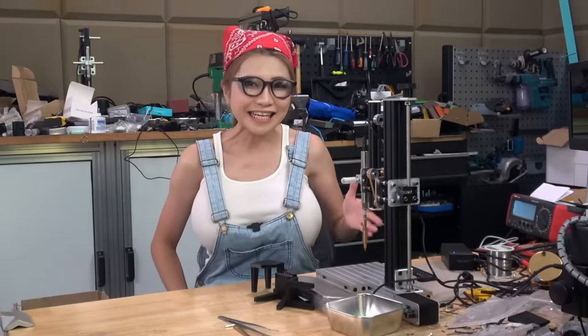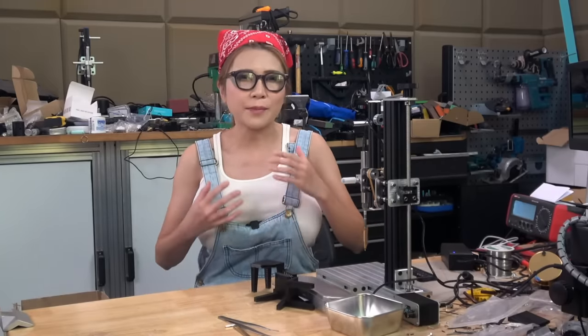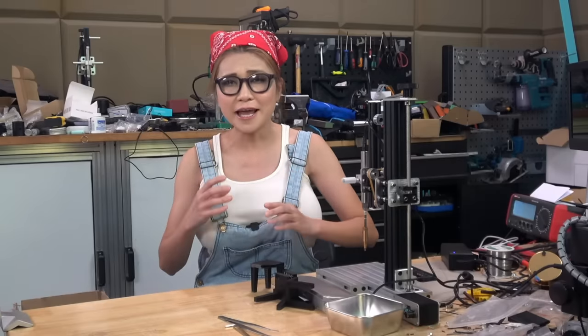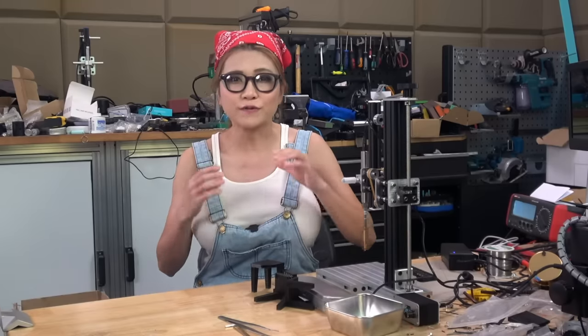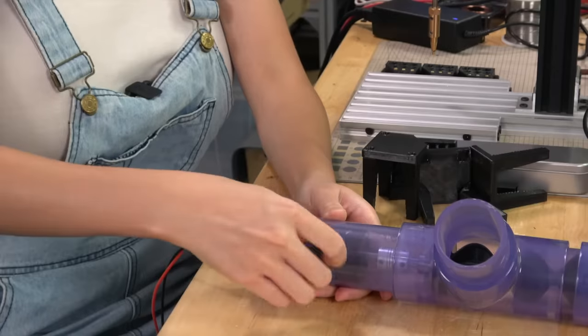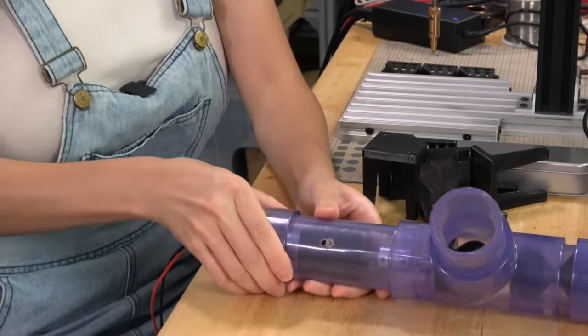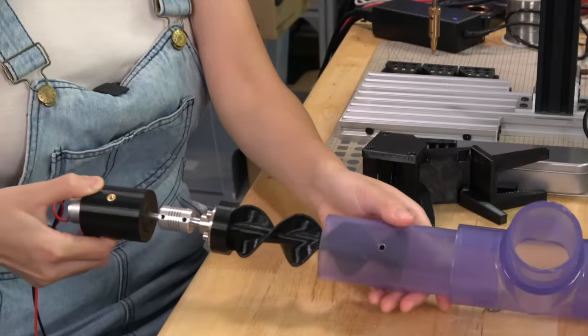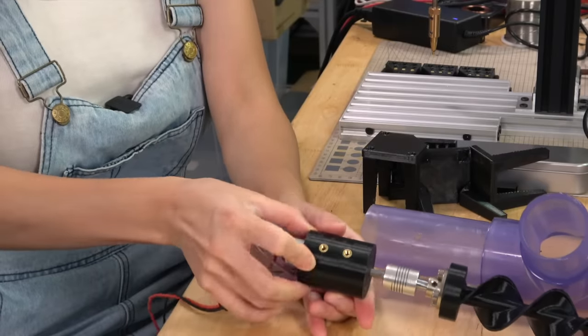The next reason we use heated inserts is it allows us to iterate. If we are making complex devices, we can quickly change the design and bolt it on. If we are cutting threads into the print with a sheet metal screw, that wears out pretty quickly. Here's an auger mechanism for an automated dog feeder I'm working on. I've made a dozen or so variations, but since I'm using heated inserts, it's easy for me to swap them out and try new things.